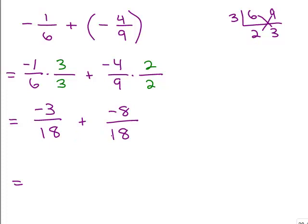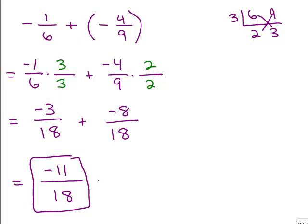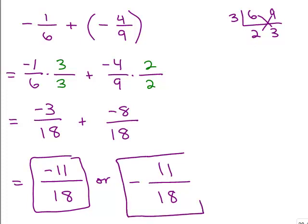Next step: we're adding fractions. When you add fractions, you write the denominator down and add the numerators. Our numerators are negative 3 and negative 8. When we add those two, we get negative 11. So you can write your answer as negative 11/18.